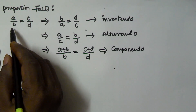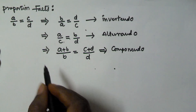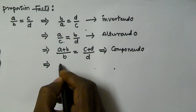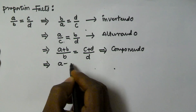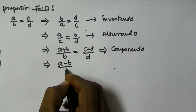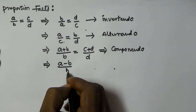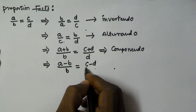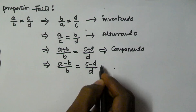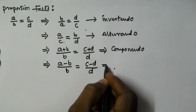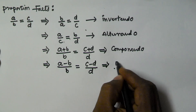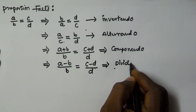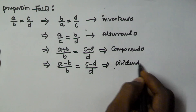If you have a proportion like A by B is equal to C by D, the same can also be written as A minus B by B is equal to C minus D by D. So this is called as dividendo.